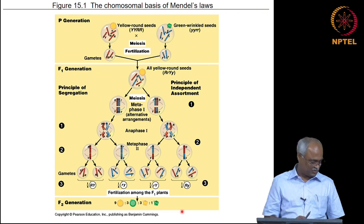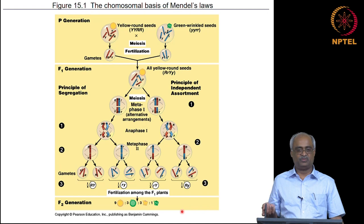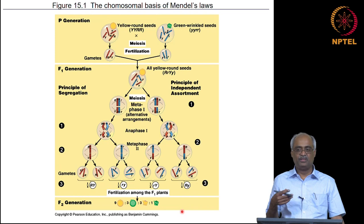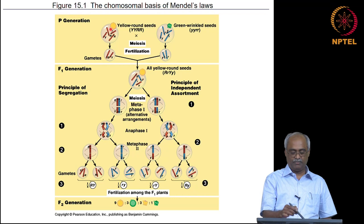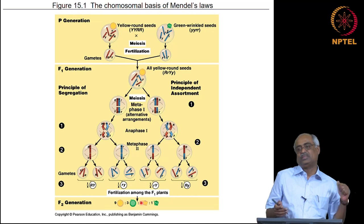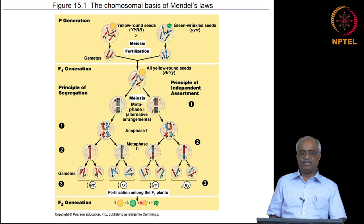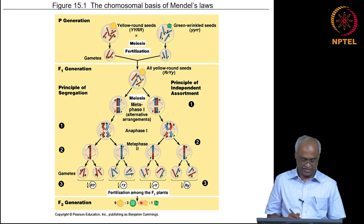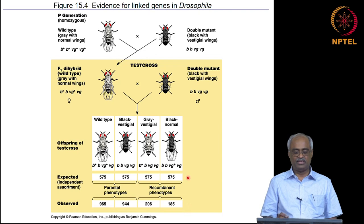Mendel saw independent assortment because the pea genome is small and every phenotype he chose happened to be on different chromosomes — he got lucky. Morgan, however, encountered a case where two genes were on the same chromosome. He proposed that multiple genes can be on the same chromosome, but the chromosomes seem to exchange or swap parts — a part of the maternal chromosome exchanges an equivalent part with the paternal homolog. This is the evidence for linked genes.